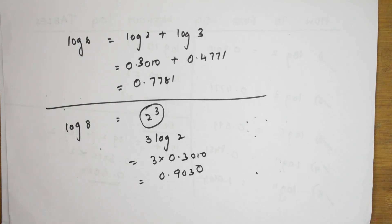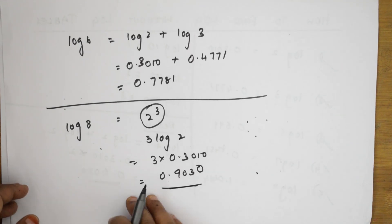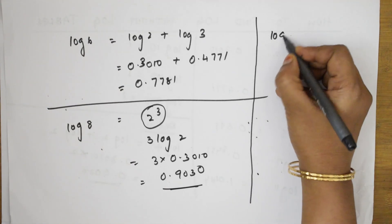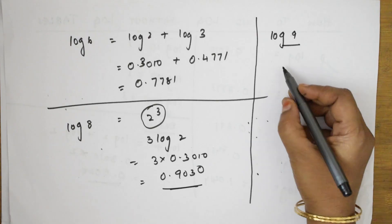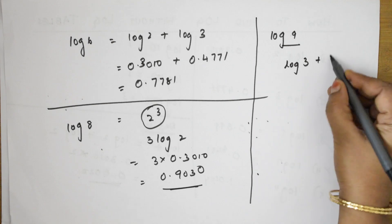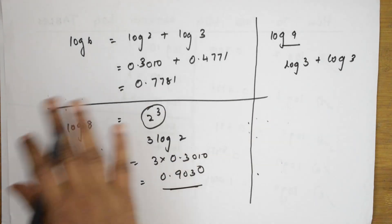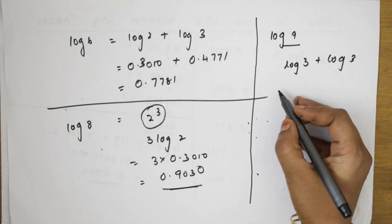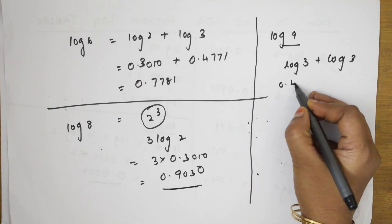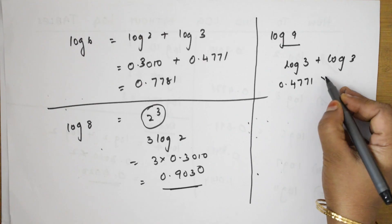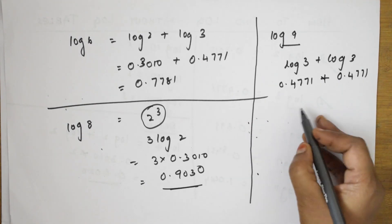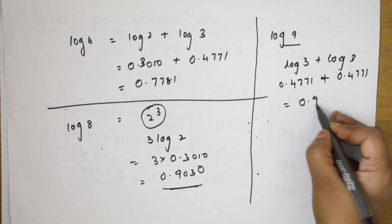We can also find log 9. Since 9 = 3×3, log 9 = log 3 + log 3 = 0.4771 + 0.4771 = 0.9542.